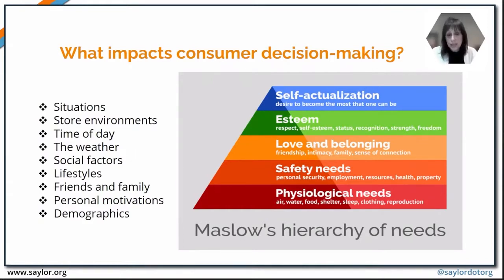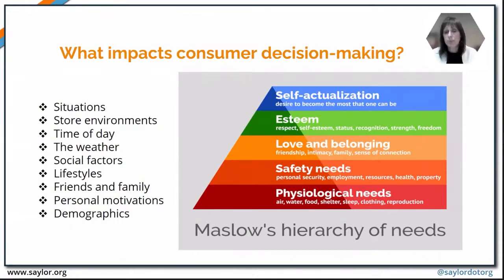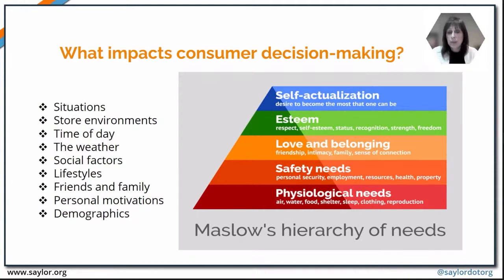No marketing class would be complete without a discussion of Maslow's hierarchy of needs. Looking at the graphic, the foundational needs we all have are food, clothing, and shelter. We can't move on to making other purchase decisions until those needs are satisfied. Once met, we move on to employment, personal security, health, and property. Once those are met, we seek love and belonging — friends, relationships, a sense of connection. Moving up, we gain confidence, feelings of respect, self-esteem, and status recognition, ultimately reaching self-actualization and the desire to be the best we can be.